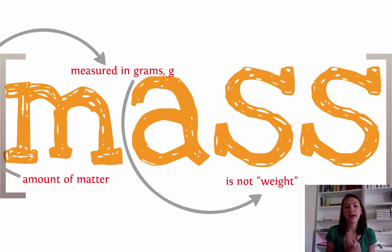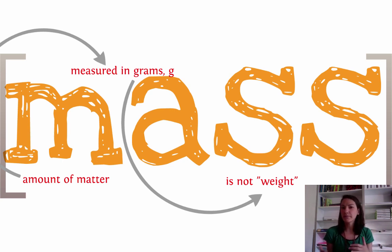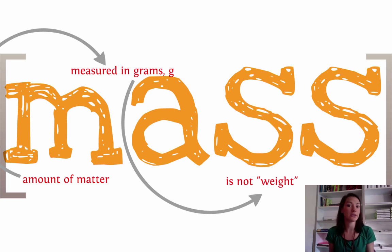First up we've got mass. Mass is an amount of stuff — it's an amount of matter. It's measured in grams or kilograms, but it's not the same thing as weight. Weight involves the pull of gravity, so mass and weight are different. Please be aware of the word choices that you're using, because mass and weight are different.